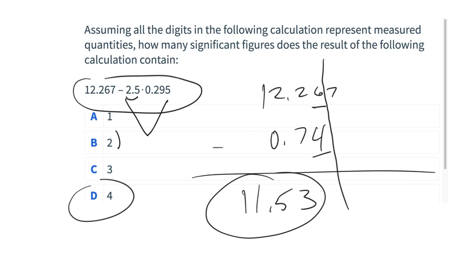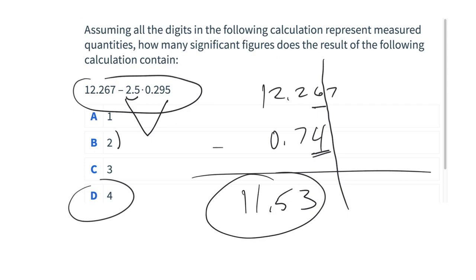On the question of when to round: on test questions, just round off your values at each step so you don't confuse yourself. In a laboratory experiment doing a chain calculation A to B to C to D, you'd usually keep an extra sig fig through intermediate steps and round only when reporting. But for tests, rounding at each step to get the right sig fig count is fine.